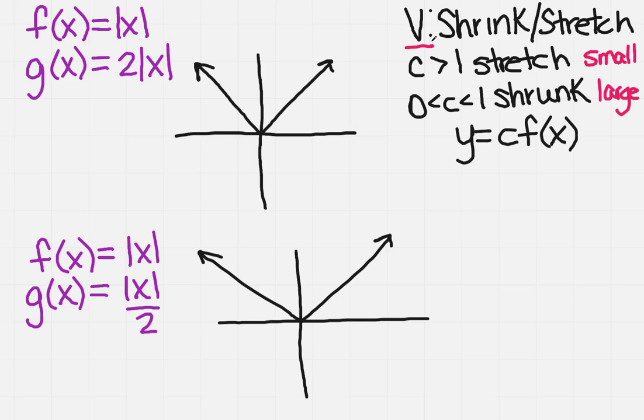Now, if C, the leading coefficient in front of your function, is greater than 1, you're going to stretch it. When you stretch it, it's actually going to become smaller than what you started with. So it's like taking your function and pulling it up so that it gets smaller. Now if your coefficient is between 0 and 1, so that means if it's a fraction, then you're going to shrink your function. And when you pull that function down, that means it's going to get bigger or larger. That's why I've associated stretch with small and shrunk with large.